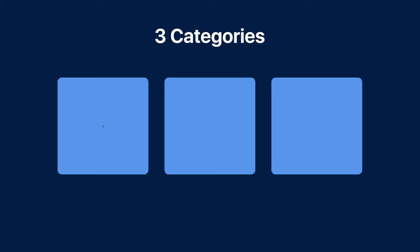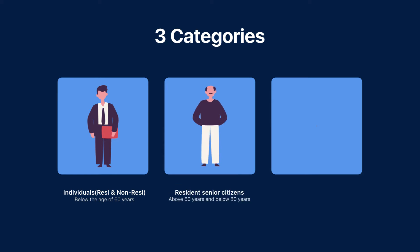There are three categories of individual taxpayers: individuals below the age of 60 years, which include residents as well as non-residents; resident senior citizens 60 years and above but below 80 years; and resident super senior citizens above 80 years.